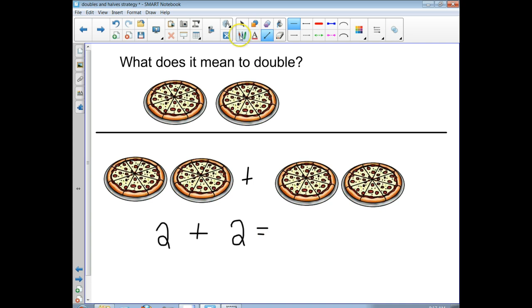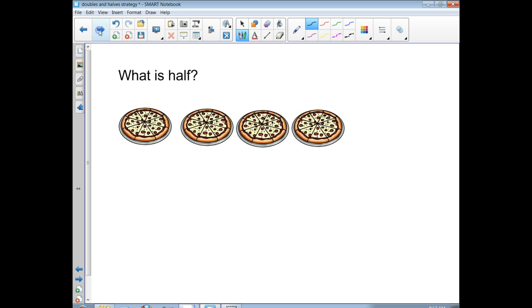So now let's talk about what does it mean to cut something in half. Half is the opposite or the inverse of doubling. So let's say I had four pizzas. You write half in a fraction like this, so we're looking to divide this into two equal groups, and half of it would be one part.